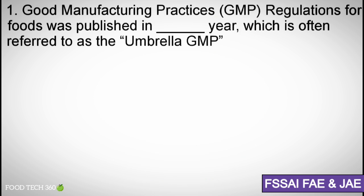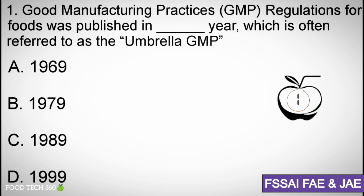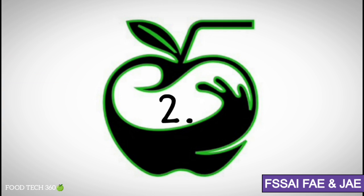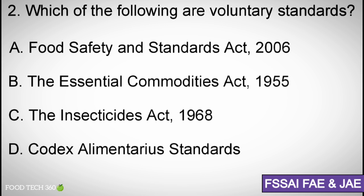Question number one: Good Manufacturing Practices regulations for food was published in which year, which is often referred to as an umbrella GMP? Options: A) 1969, B) 1979, C) 1989, D) 1999. Correct answer: A) 1969.